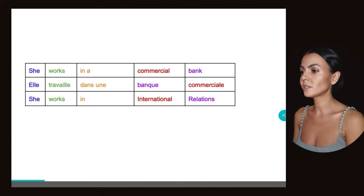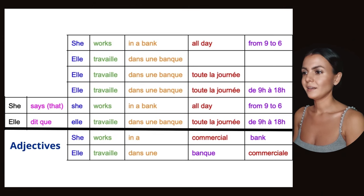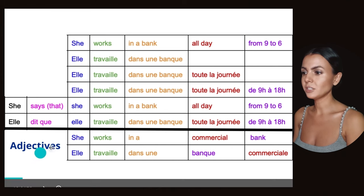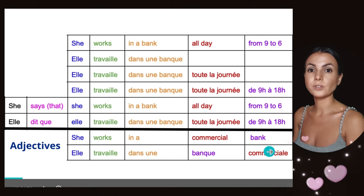One more: She works in international relations - Elle travaille dans les relations internationales. Also, the adjective goes after. So what do we have? Look, the full table here. We have like in English, and then we have our first case: adjectives.